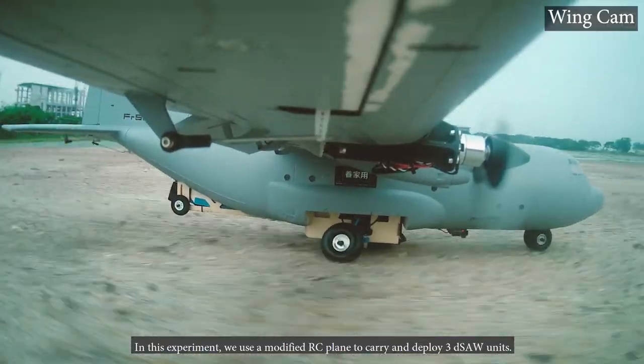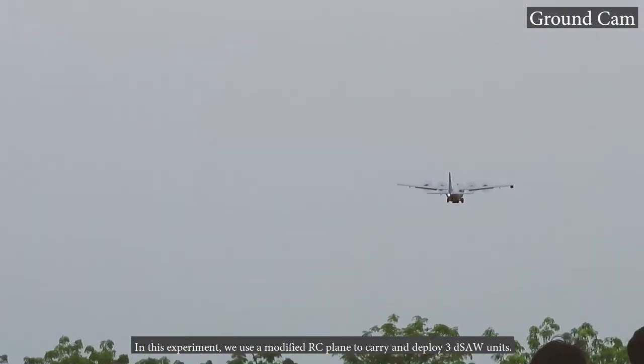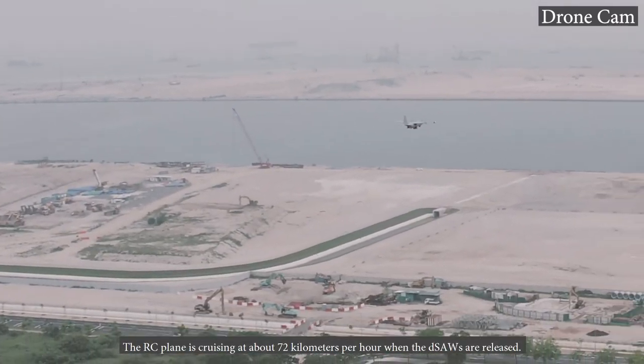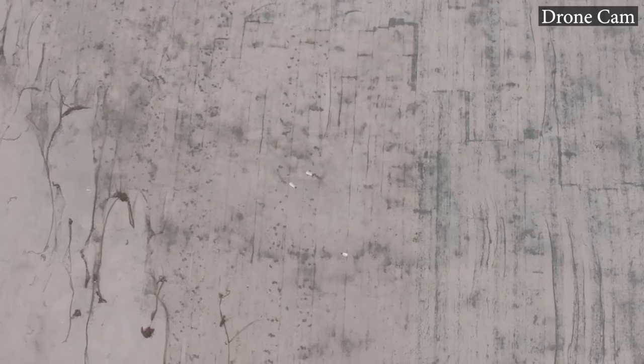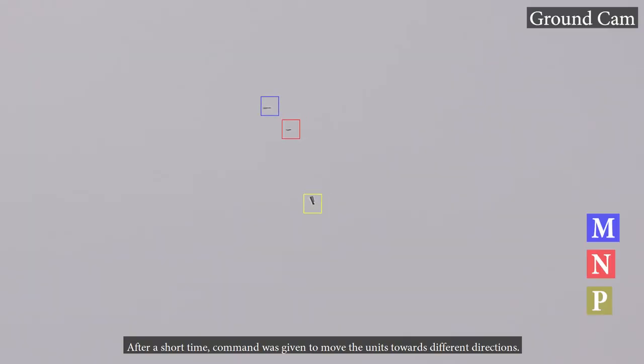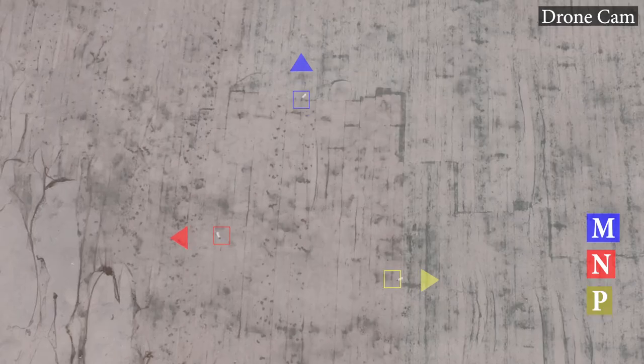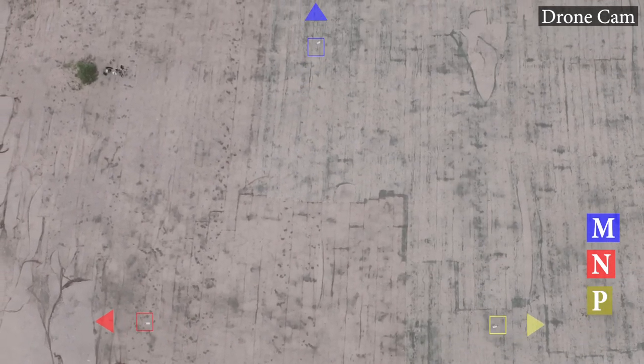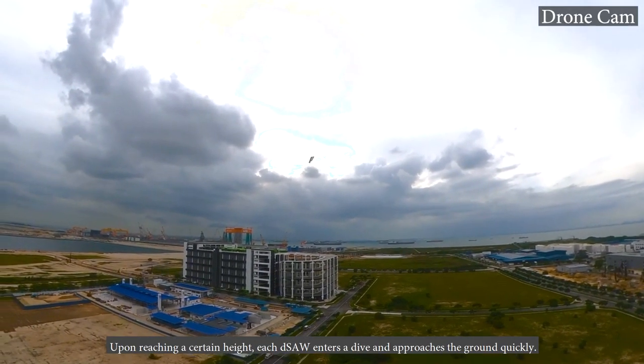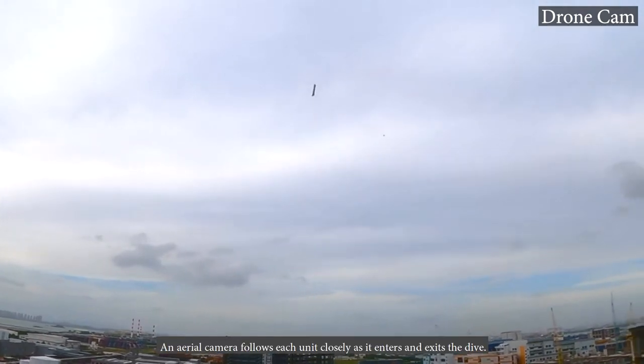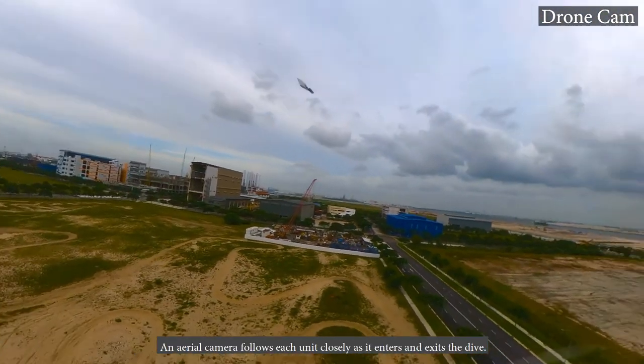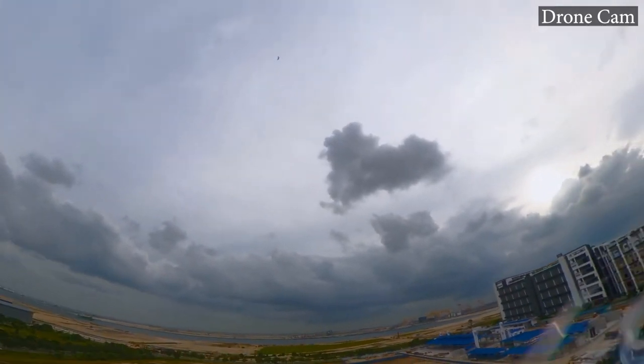In this experiment, we used a modified RC plane to carry and deploy three D-Saw units. The RC plane was cruising at about 72 km per hour when the D-Saws are released. The three D-Saws enter autorotation immediately. After a short time, command was given to move the units towards different directions. Upon reaching a certain height, each D-Saw enters a dive and approaches the ground quickly. An aerial camera follows each unit closely as it enters and exits the dive. More information can be found in the paper.